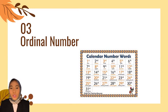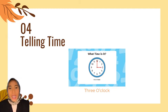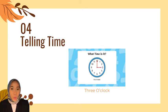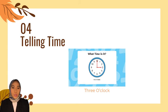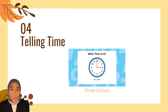Next, we're talking about time. We say o'clock when the long hand on the clock points at 12. The example is shown on the screen — we can say it is three o'clock.